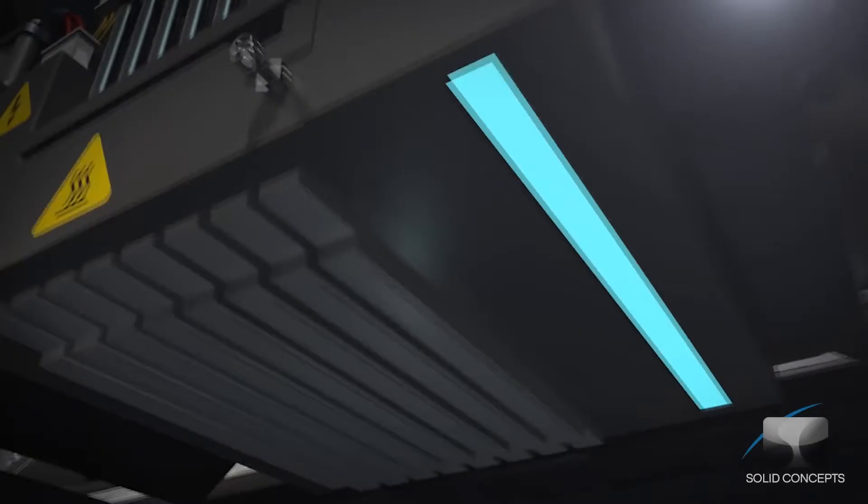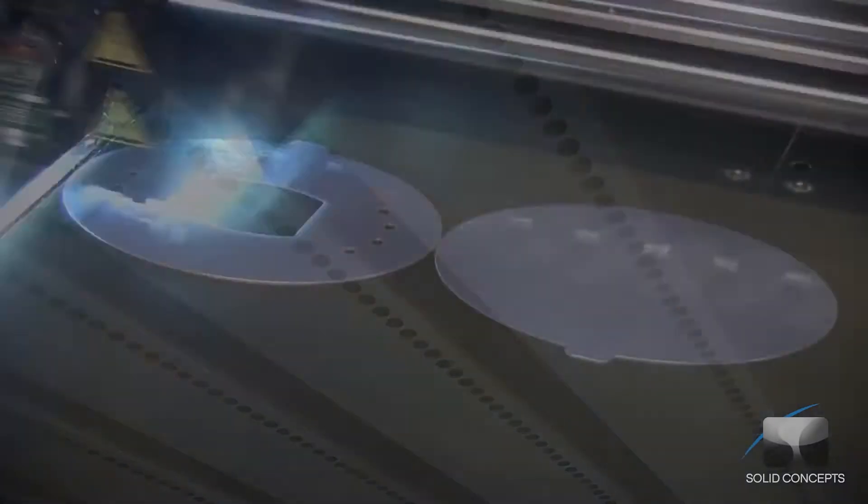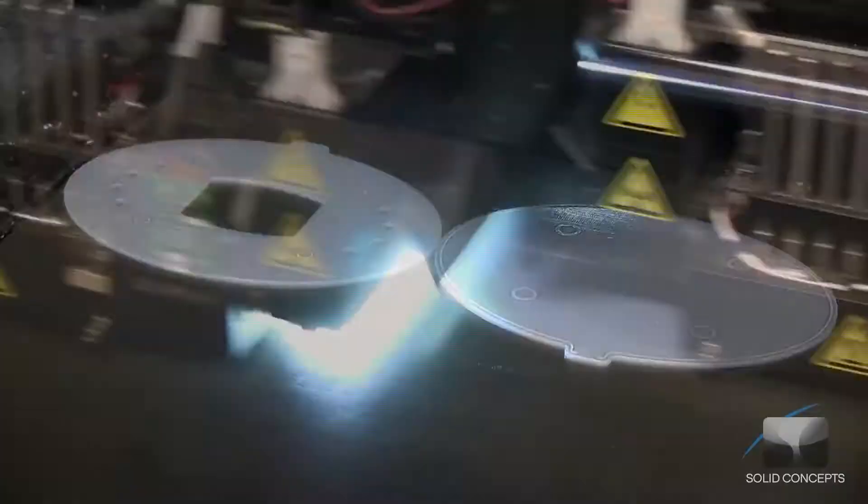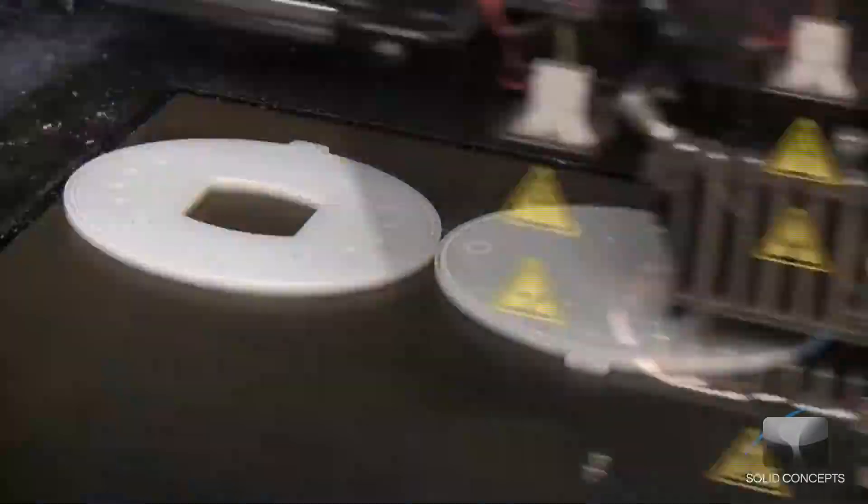Similar to how an inkjet printer lays down pigment, the PolyJet printhead deposits small amounts of ultraviolet curable material on the build platform, eventually forming a single cross-section of the part. An ultraviolet light attached to the printhead simultaneously cures the material as it is printed.